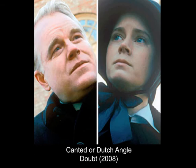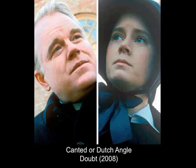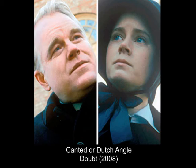This is called a canted or Dutch angle — basically an angle that's tilted, so we see the character from an off-axis perspective. These types of shots are used purposefully to create chaos, suspicion, and confusion for the viewer. This is used in Do the Right Thing, where canted angles make you feel even more uncomfortable during a violent scene. In Doubt, the director uses the canted angle a good deal to add to the mystery, suspicion, and doubt that runs throughout the film.